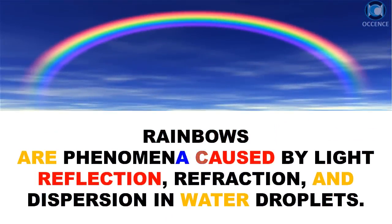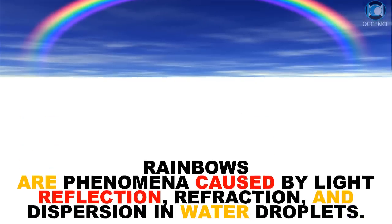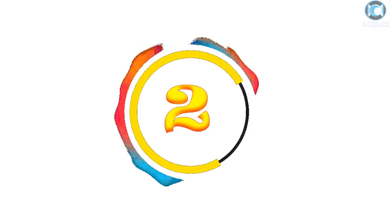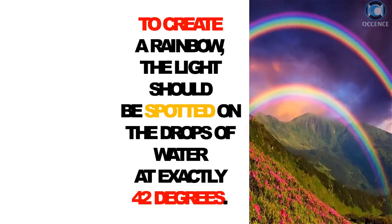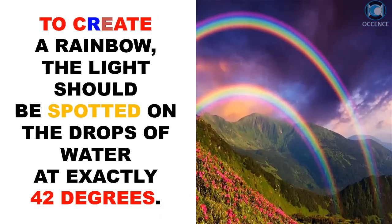Rainbows are phenomena caused by light reflection, refraction, and dispersion in water droplets. To create a rainbow, the light should be spotted on the drops of water at exactly 42 degrees.